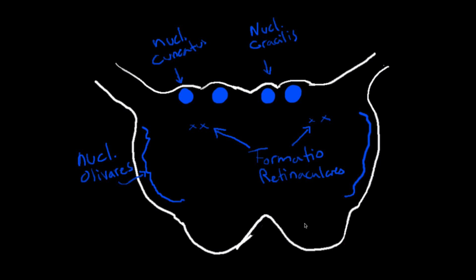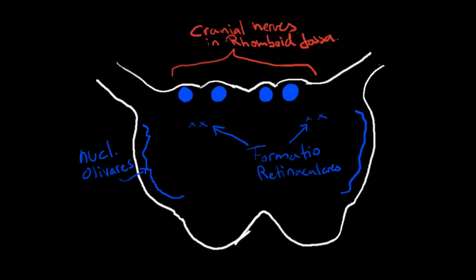The next structure in the gray matter is the formatio reticularis, seen right here. The formatio reticularis is a network of cells and fibers in the spinal cord and brain stem that controls conscious movement and some vital functions like sleeping, walking, and eating. Another thing found in the gray matter is the cranial nerves, which are located in the rhomboid fossa. I'll talk more about the rhomboid fossa later. That covers the gray matter.